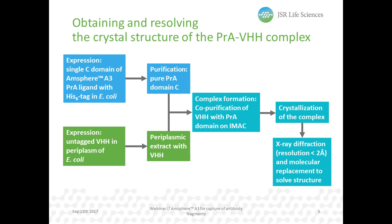You see a schematic overview of how this crystal structure was obtained. A single C domain of the M3A3 ligand was expressed in E. coli and subsequently purified through its His-tag on a nickel IMAC column. In parallel, an untagged VHH was expressed also in E. coli and the periplasmic proteins were extracted by osmotic shock. The complex was co-purified with the histidine-tagged protein A on a nickel IMAC column, yielding the purified complex. After crystallization, the crystals were used for X-ray diffraction, and by molecular replacement we found a model for this complex.